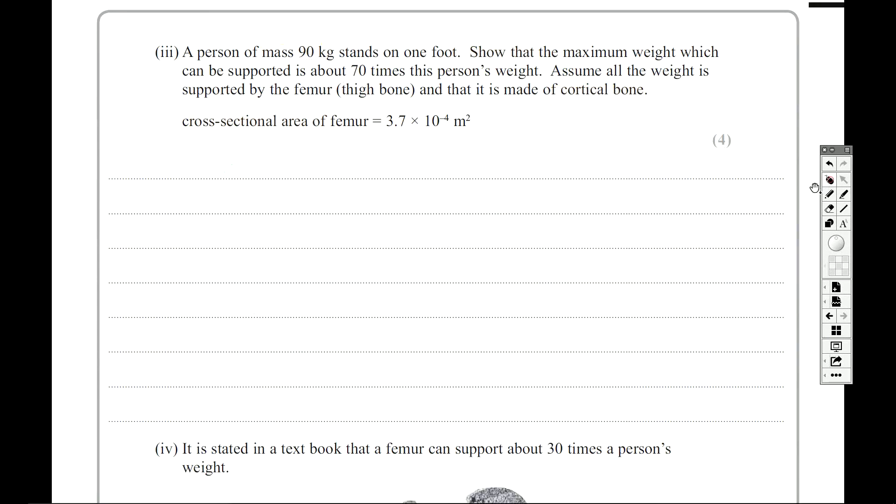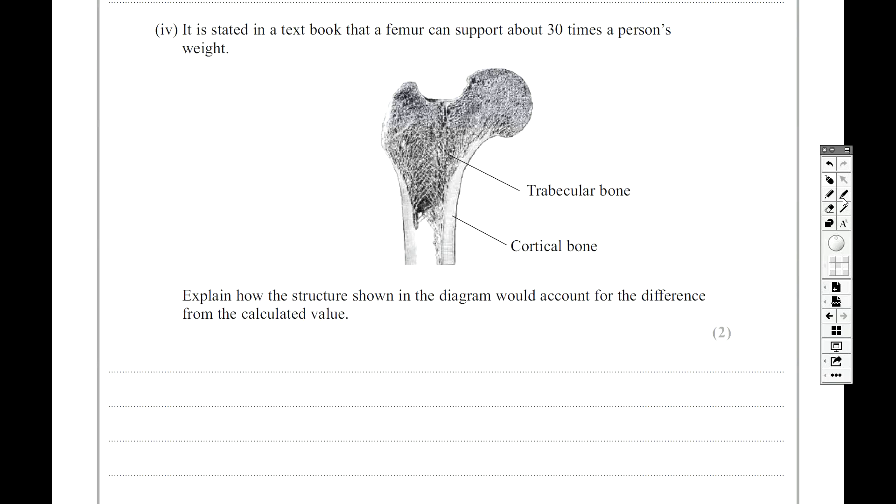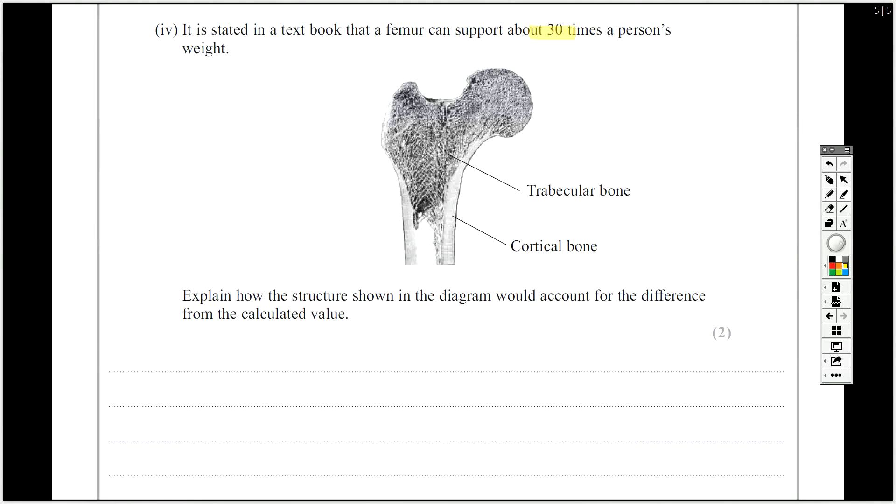Last bit of this question then is about the actual bone itself. It's stated in a textbook that a femur can support 30 times a weight. So this is different to what we just talked about. We've talked about it being 70 times a weight. Explain how the structure shown in the diagram would account for the difference from the calculated value. So the calculated value was the 70 times that we're talking about and the actual value here is 30 times. Well why is that? If you think about the calculation we've just done it's talked about the cross-sectional area of the femur and we can see that not all of the cross-sectional area, in fact only about half here at this point and less here, is actually cortical bone.